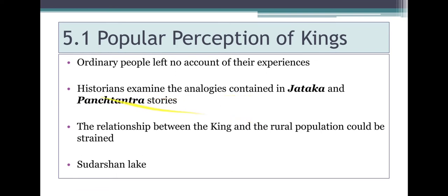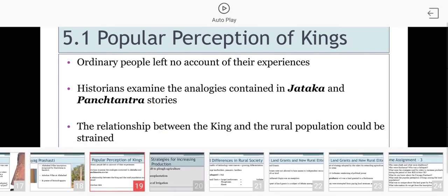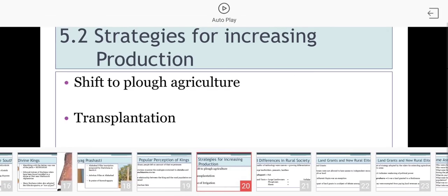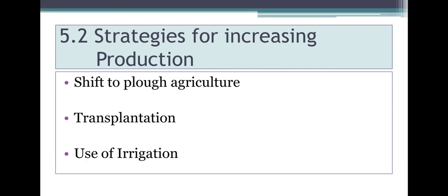Some years later, a terrible storm caused the embankments of the lake to break and all the water was lost. Rudradaman, who ruled that area at the time, repaired the lake with his own funds and even placed an inscription there about it. This presents an interesting angle — a ruler trying to help his subjects. However, one question is why Rudradaman needed to repair the lake himself. Perhaps it was a strategy to increase agricultural production, which in turn would allow the ruler to collect better taxes.